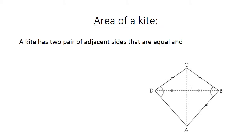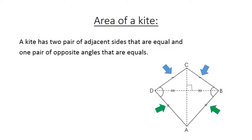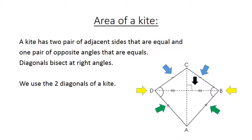Area of a kite. A kite has two pairs of adjacent sides that are equal and one pair of opposite angles that are equal. The diagonal bisects at right angles. We use the two diagonals of a kite. Area equals a half in brackets AC times BD.